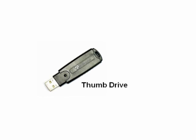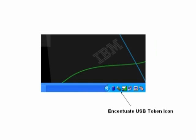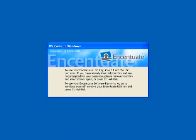You will be issued a USB token and access agent will be installed on your computer before you can begin using the TAL service. You should be able to see an icon of a USB token in the lower right-hand corner of your computer screen. After you have been registered with the TAL server and your computer has access agent properly installed, you are ready to use the TAL service.